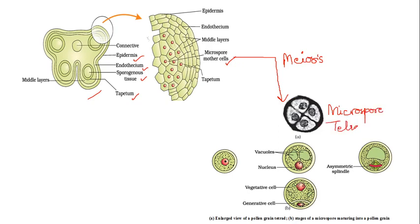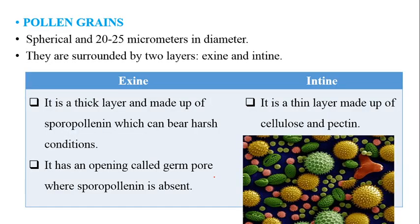Now, one of the microspores from this tetrad will undergo mitosis and form a vegetative cell and a generative cell. Now we talk about the pollen grain. It is a spherical structure.